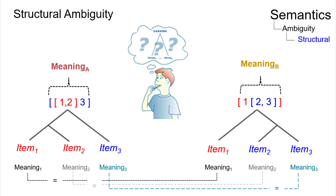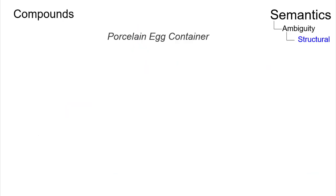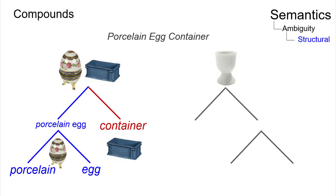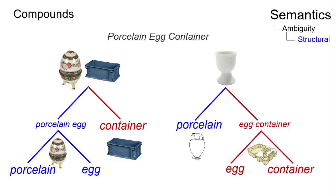For example, this complex nominal compound can be interpreted in two ways, depending on its structural hierarchy: a container for porcelain eggs, and an egg container made of porcelain.